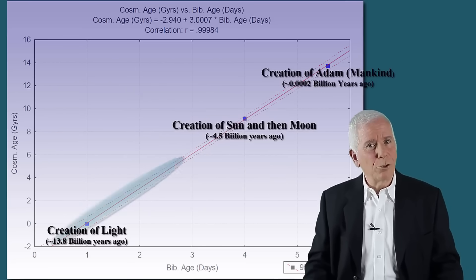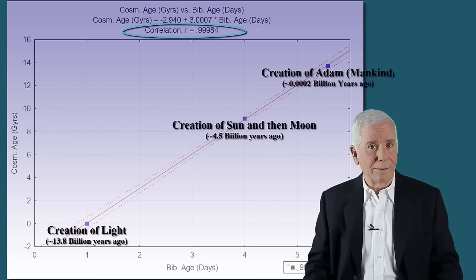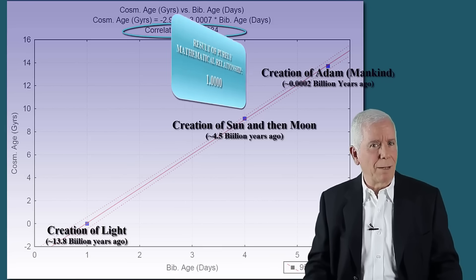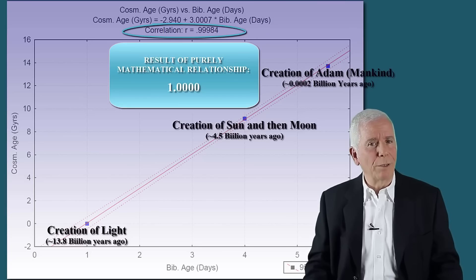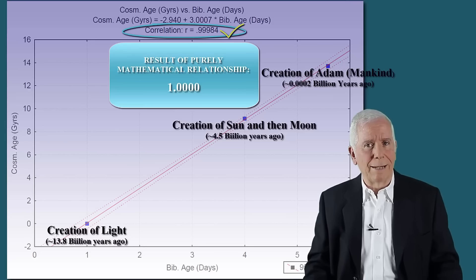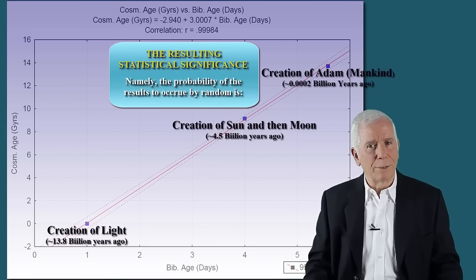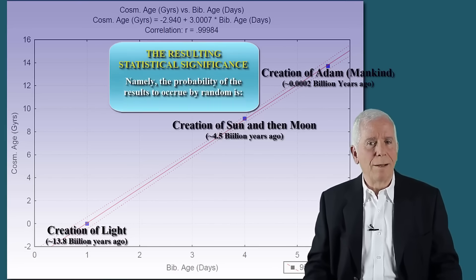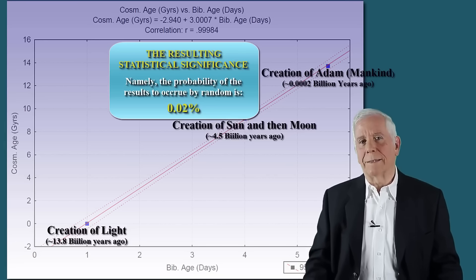Consider that the linear correlation is 0.9998. If the points had maintained a truly mathematical relationship, the linear correlation would have been 1.0000, and here 0.9998. The resulting statistical significance, namely the probability of the results to occur by random, is 0.02%. Namely, two hundredths of one percent, low probability by all accounts.